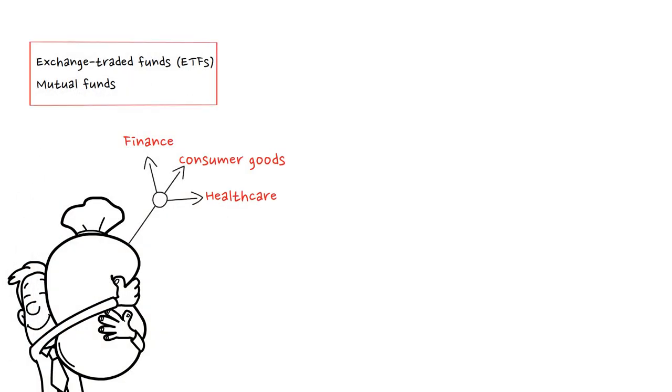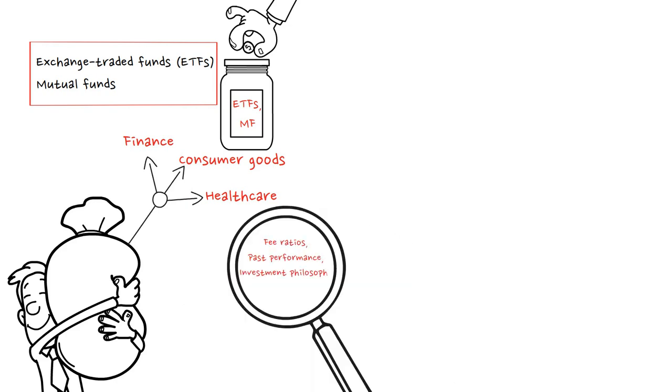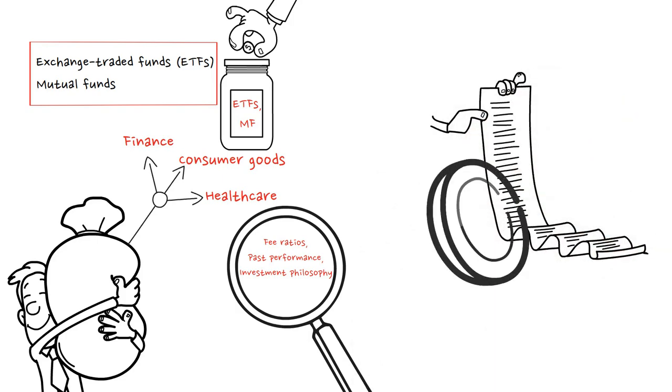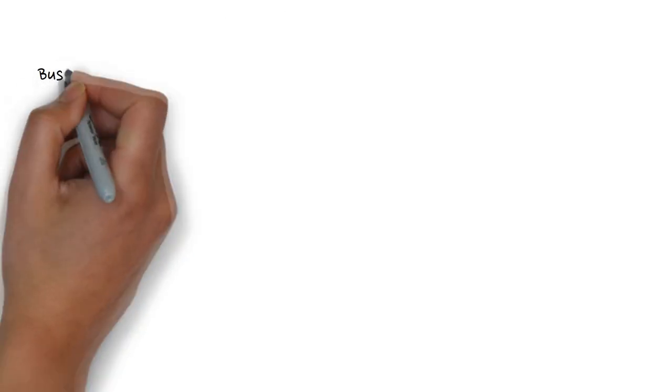Exchange-traded funds (ETFs) and mutual funds are both effective diversification tools. You can expose yourself to a variety of equities or bonds by investing in a single mutual fund or ETF. Consider factors like fee ratios, past performance, and the investment philosophy when choosing these tools. Search for programs that fit your goals and have a track record of generating reliable results.